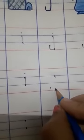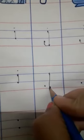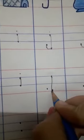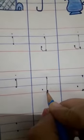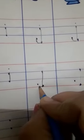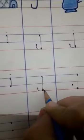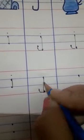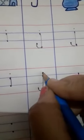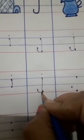Now we write letter J. First we will write a standing line and write a small up curve. Like this, and put a dot. This is a small letter J.